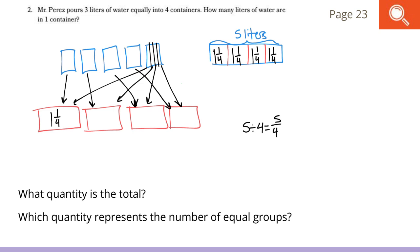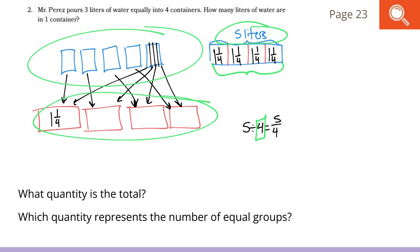Continuing our learning on this problem, let's think about what quantity is the total. The quantity that we have, starting off, is 5 liters. And that is shown in the tape diagram, as well as my model. Which quantity represents the number of equal groups? Well, that would be the four groups seen here in the tape diagram, and the four red groups shown in the model, as well as my divisor.